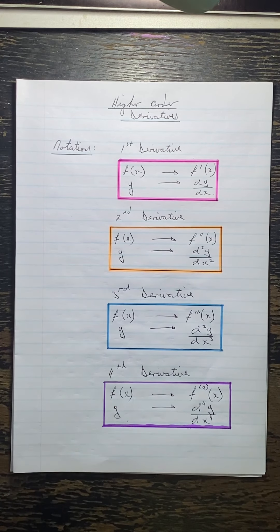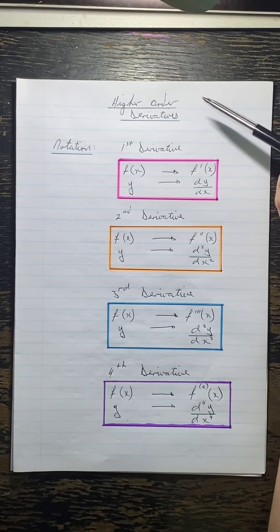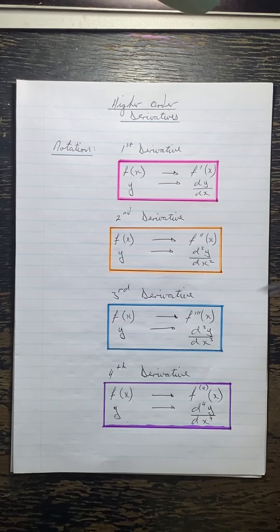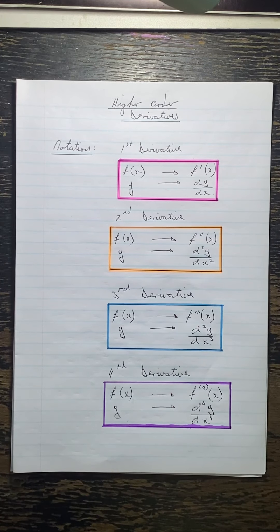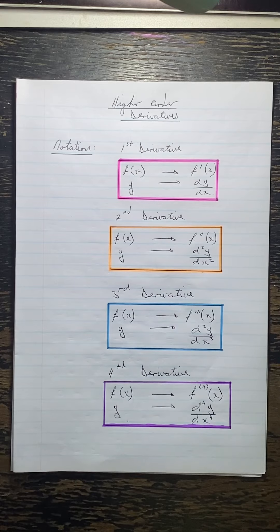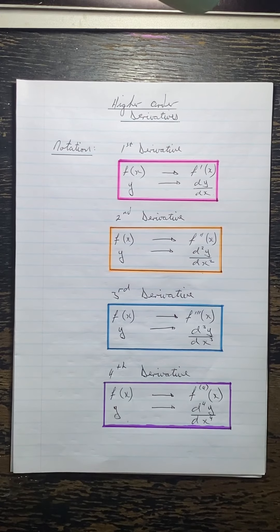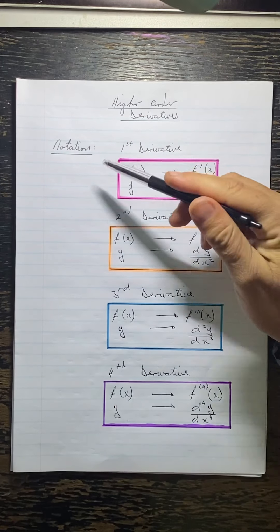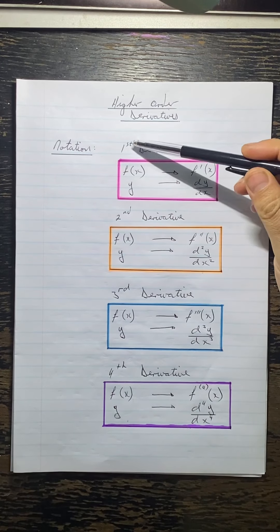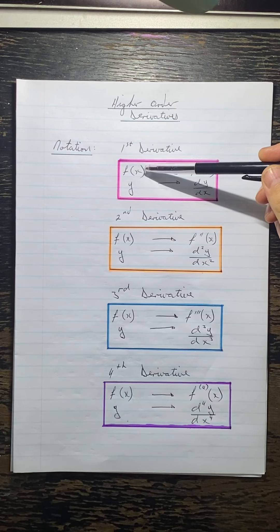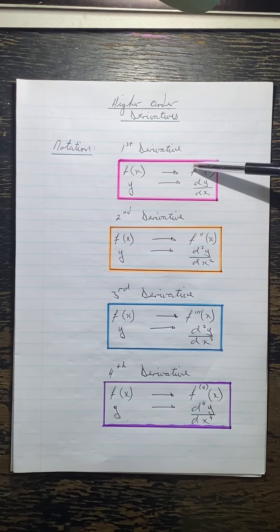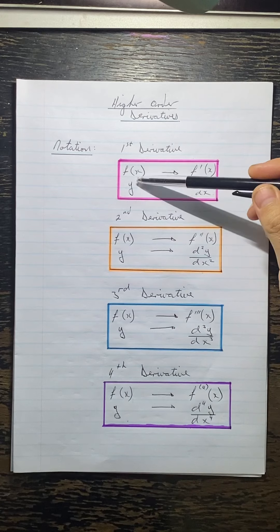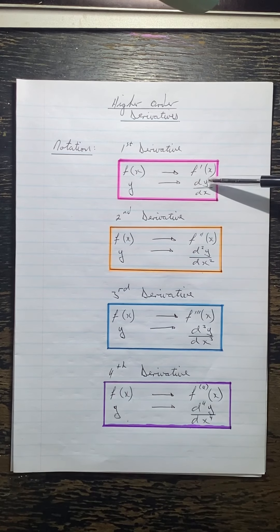We are going on to higher order derivatives — chapter 29, page 115. Just to talk about some notation: as you've seen for the first derivative, if it's given in the f(x) form, we say f dashed x. If it's given in the y form, to find the derivative we say dy/dx.